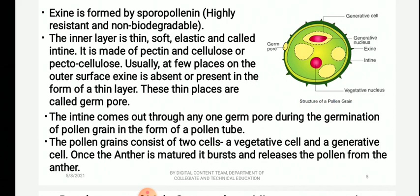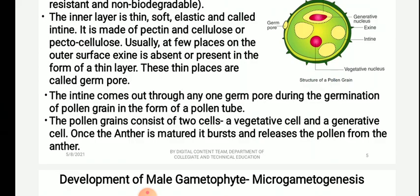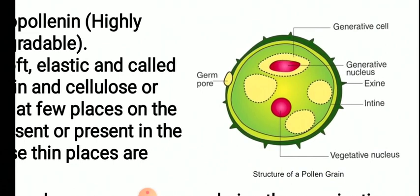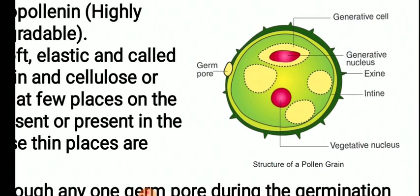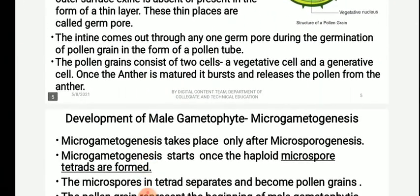Pollen grain consists of two cells: vegetative cell and a generative cell. Once the anther is matured, it bursts and releases the pollen. The pollen is made up of two wall layers — outer exine and inner intine. The exine is absent or very thin at some places, called germ pores, through which the vegetative cell along with the intine comes out as a pollen tube. Inside the cytoplasm, you will find the smaller generative cell and the bigger vegetative cell. This is the structure of the male gametophyte.